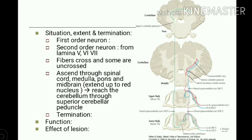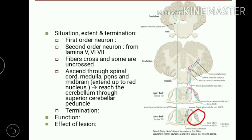Regarding situation, extent, and termination: the first order neuron is in the dorsal root ganglion. In the diagram, the ventral spinocerebellar tract is depicted with green color. These first order neurons in the spinal cord end around Clark's column of cells, lamina 7, on the same side. From there, second order neuron fibers start from lamina 5, 6, and 7.